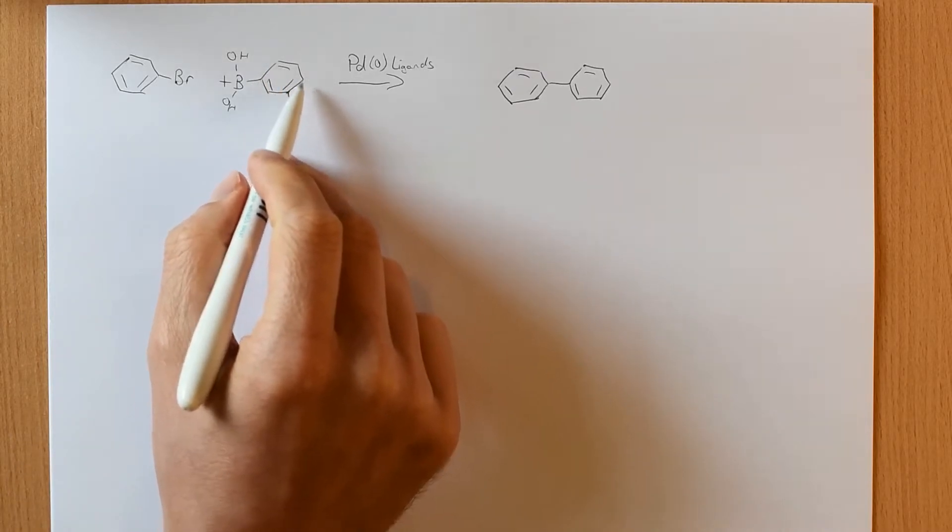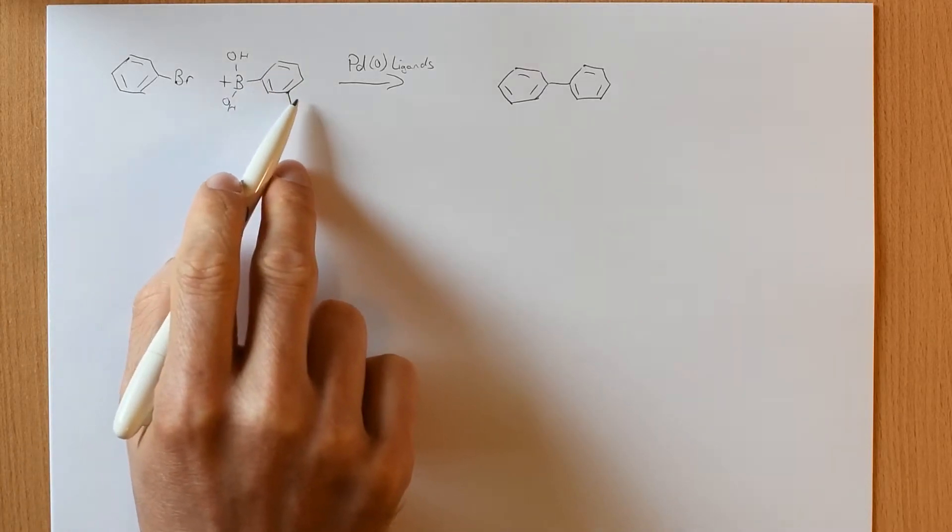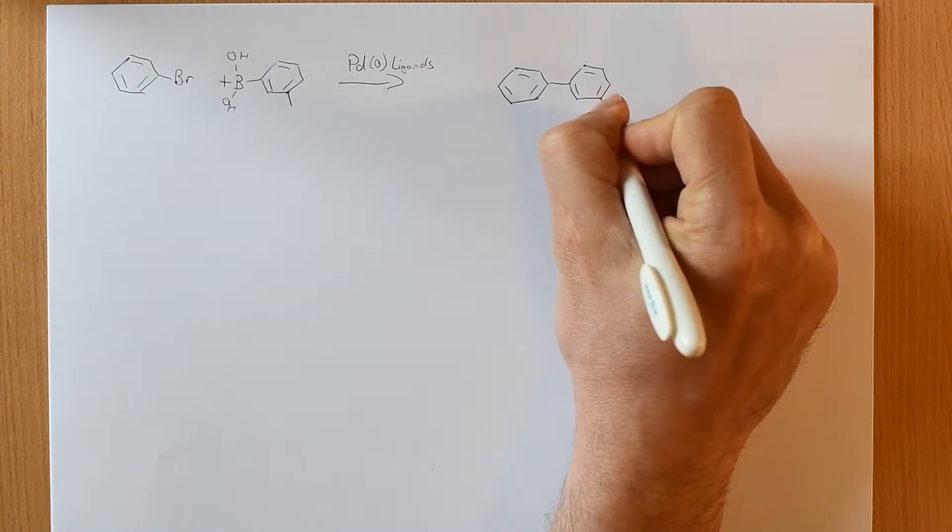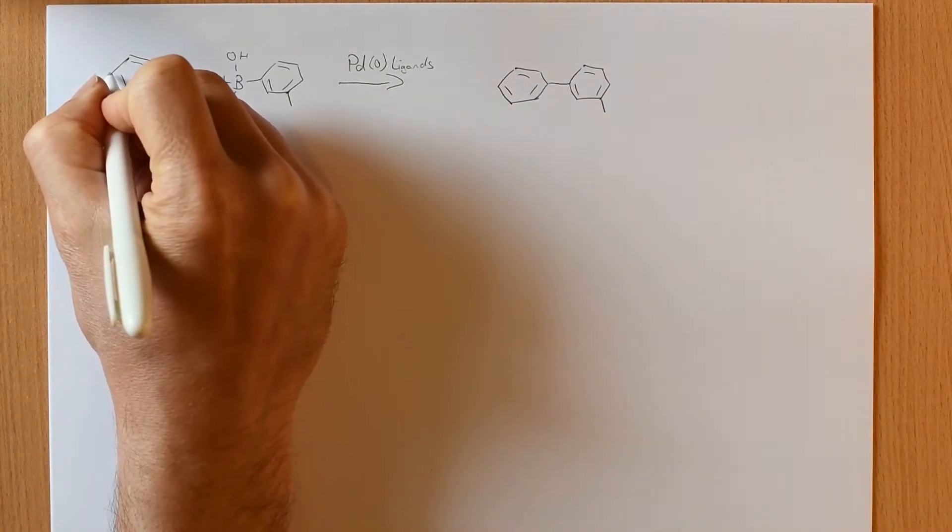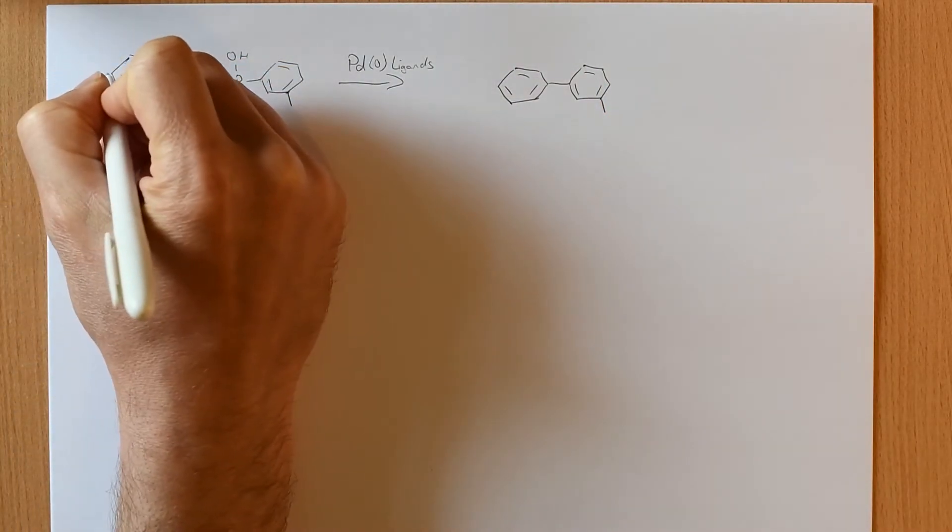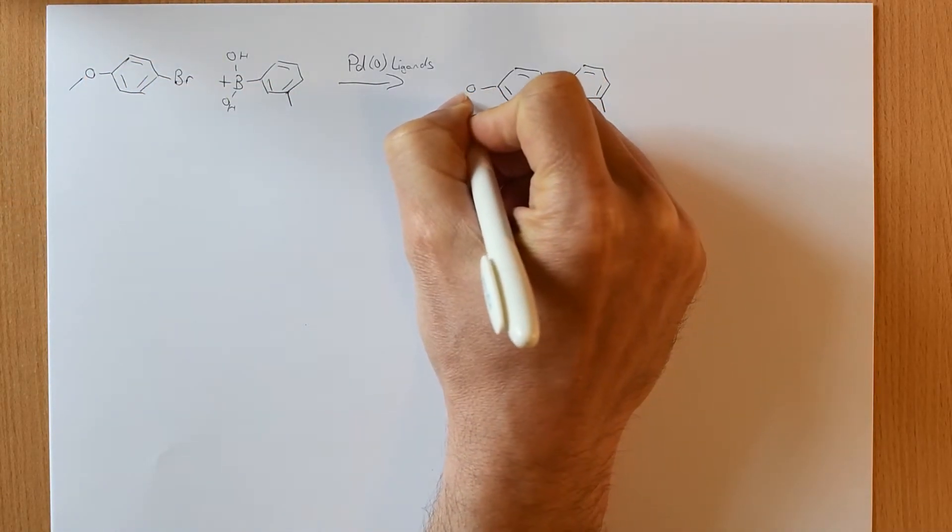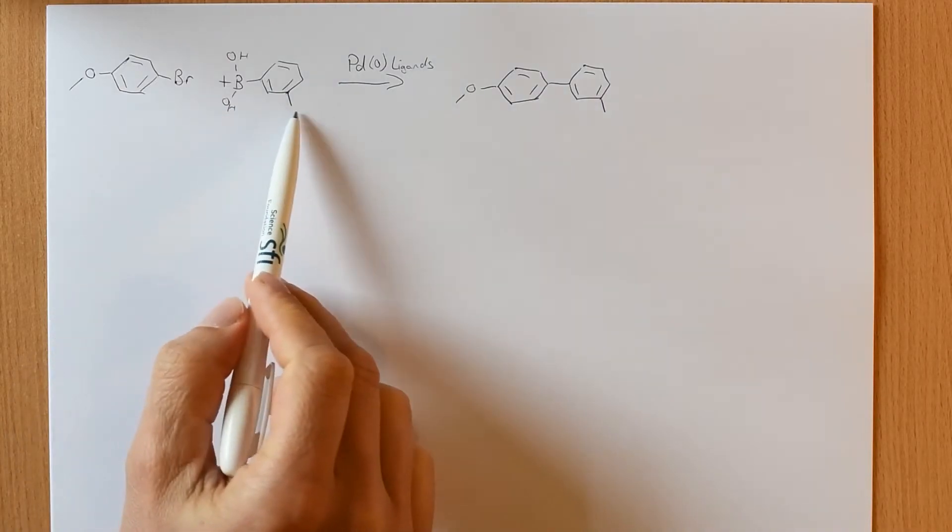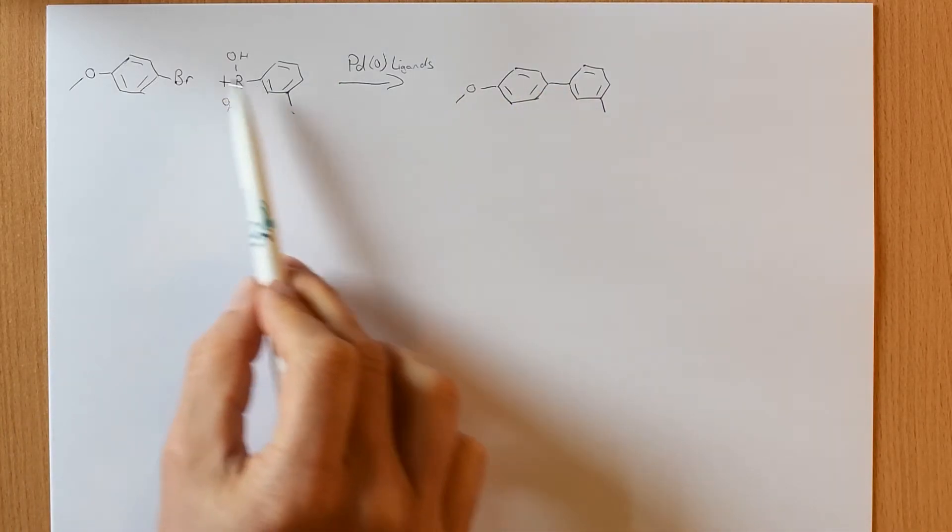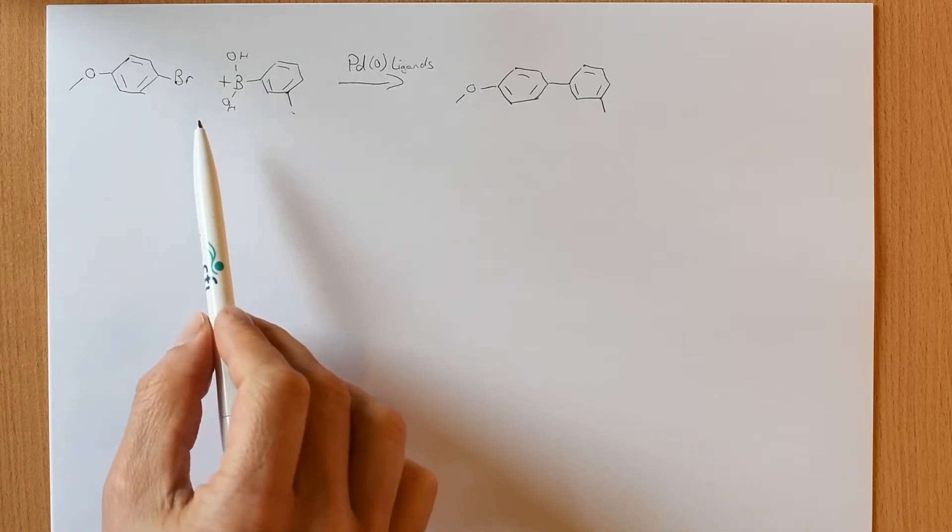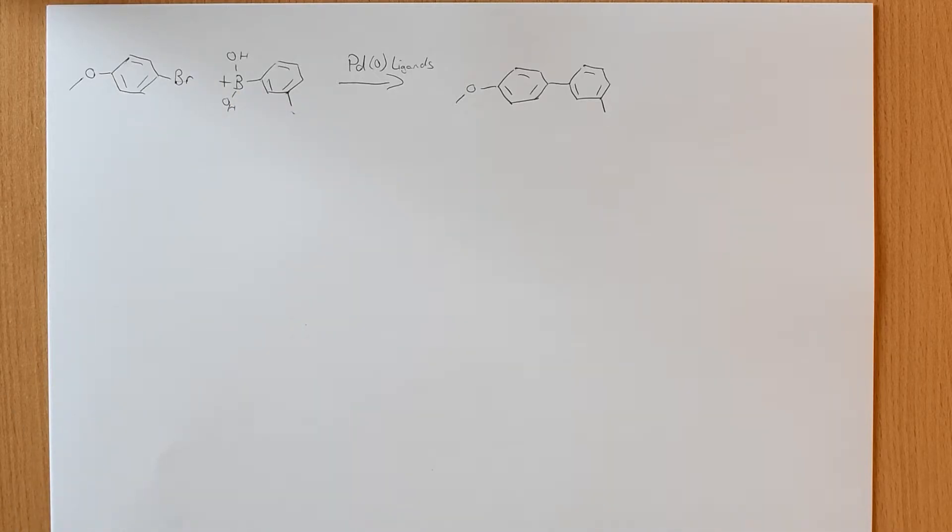So supposing we did it with the methyl, then we can make that. Or we could do this with different substituents. We can make that the methoxy, and we would end up with that in our final product. So whatever starting materials we choose, we can do this cross coupling. The scope is really wide and really useful.